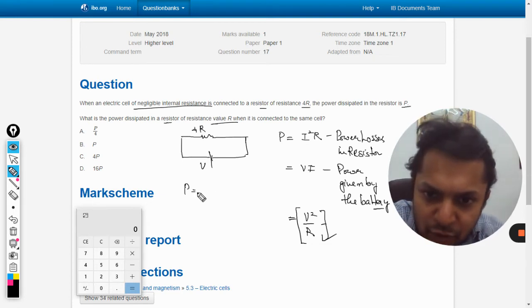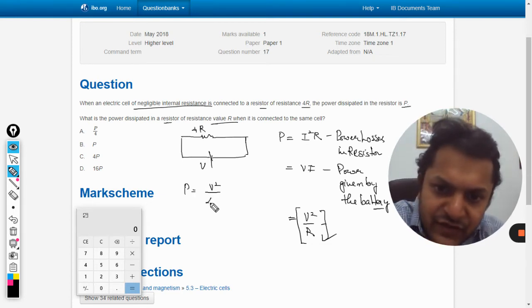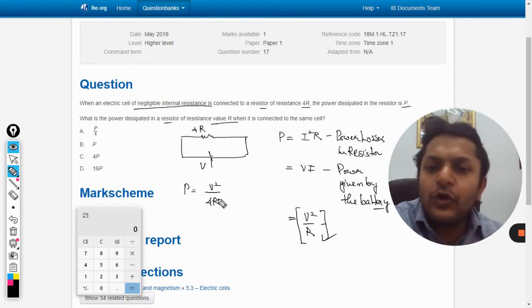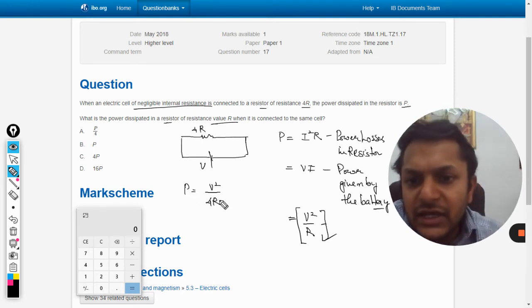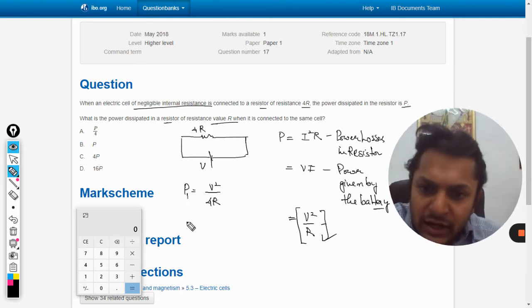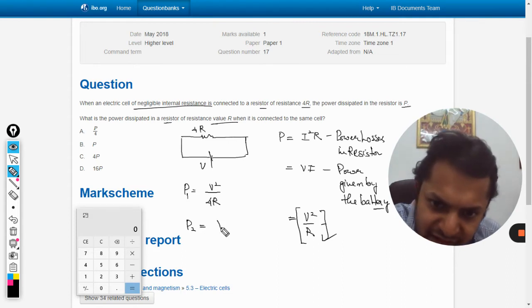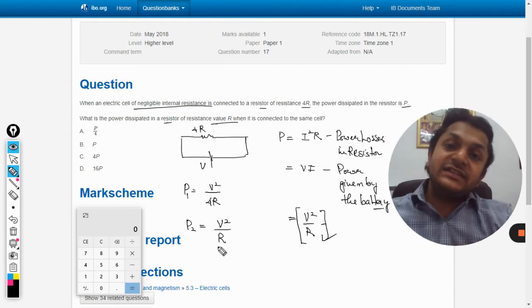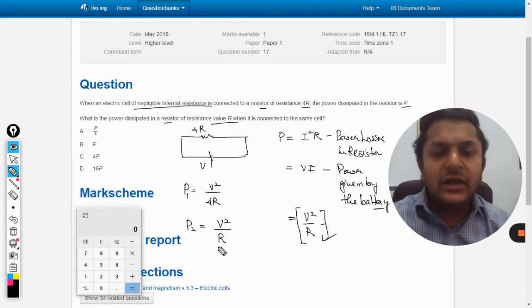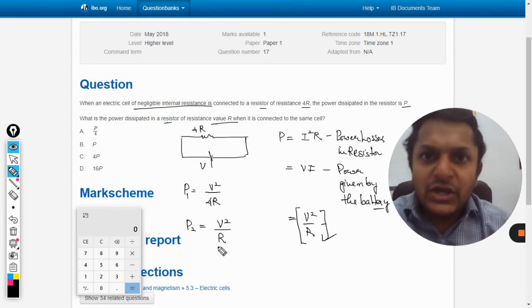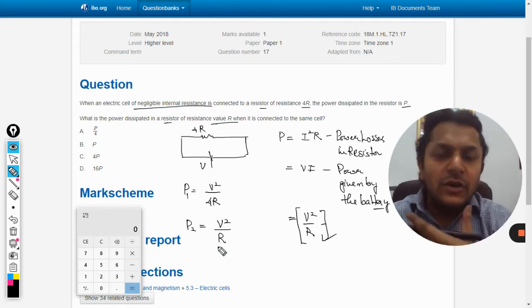In this first case, the power output will be given by V²/4R. This will be power output in case number one. Case number two, it is V²/R because now the resistance is changed from 4R to R and the battery is kept same. They're asking the ratio of P1 and P2.